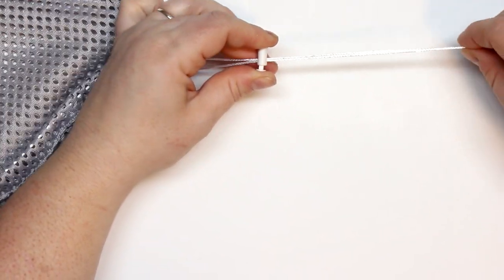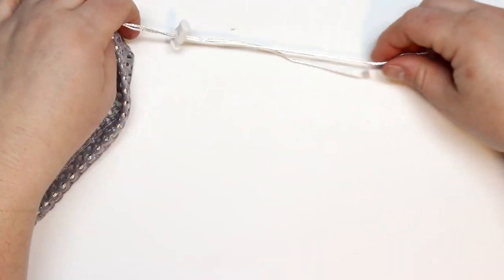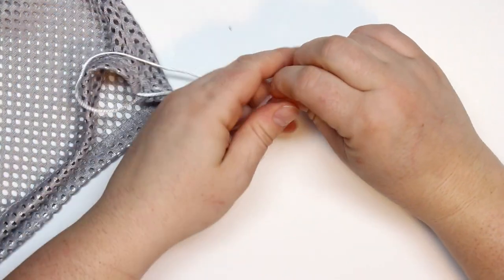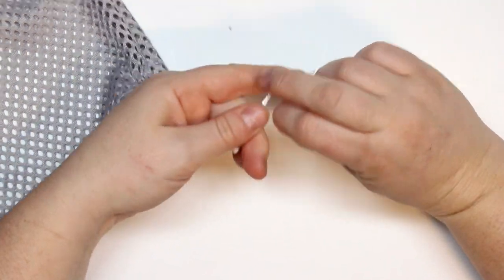And of course to stop it from coming back through the toggle we're just going to put a few knots at the end of the cord. And then that is pretty much it.